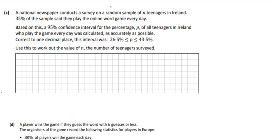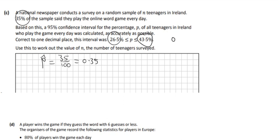Part (c) is a confidence interval in reverse. 35% of the sample said they play the game, so our sample proportion p̂ = 0.35. We use the 95% confidence interval formula and the given bounds of 0.265 and 0.435. Taking the upper bound: 0.35 + 1.96 × √(0.35 × 0.65 / n) = 0.435.